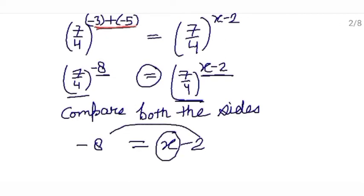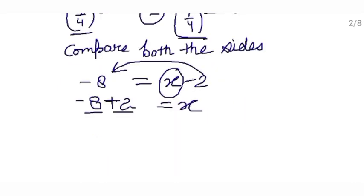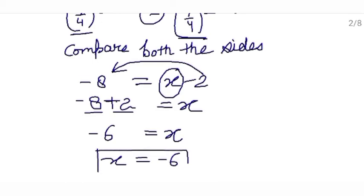Move this 2 to the other side. After moving, it will be of plus sign. So minus 8 plus 2 equals x. Signs are opposite, so values will be subtracted — this is 6 and the sign will be of the greater numeral, which is minus. So from here we can see that x equals minus 6. This is the value of x.